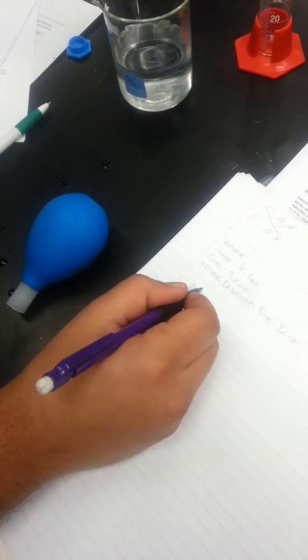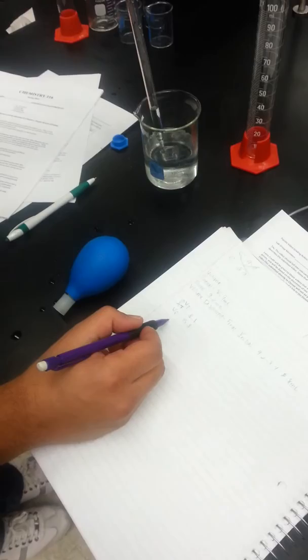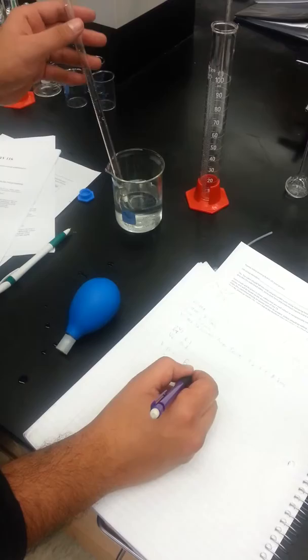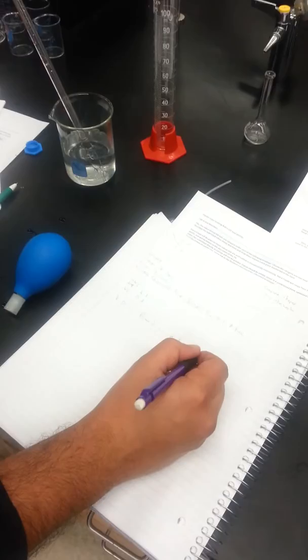So we have to find the volume, which is 8.9 milliliters for the final volume, minus 8.1 milliliters, and we have 0.7 milliliters.